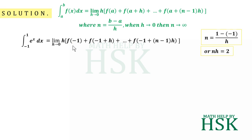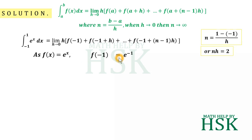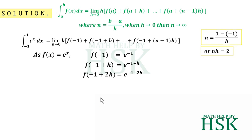Now to solve the question, I have to calculate the total of f of minus 1, plus f of minus 1 plus h, and so on up to the last term. As f(x) is equal to e to the power of x, f of minus 1 will be e to the power of minus 1, f of minus 1 plus h will be e to the power of minus 1 plus h, and f of minus 1 plus 2h will be e to the power of minus 1 plus 2h.